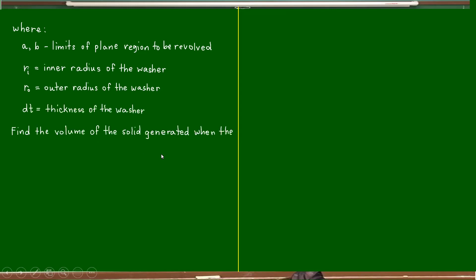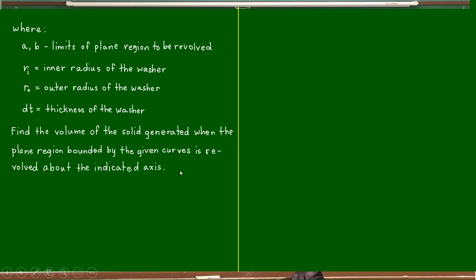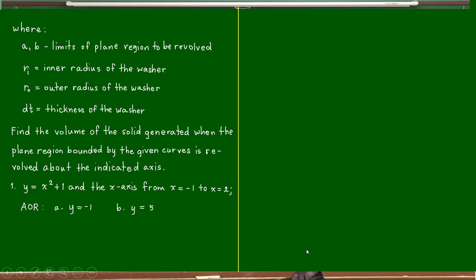Let us have the following examples. Find the volume of the solid generated when the plane region bounded by the given curves is revolved about the indicated axis. Number one: y equals x squared plus one, and the x-axis from x equals negative one to x equals two. The axis of revolution — letter a: y equals negative one; letter b: y equals five.